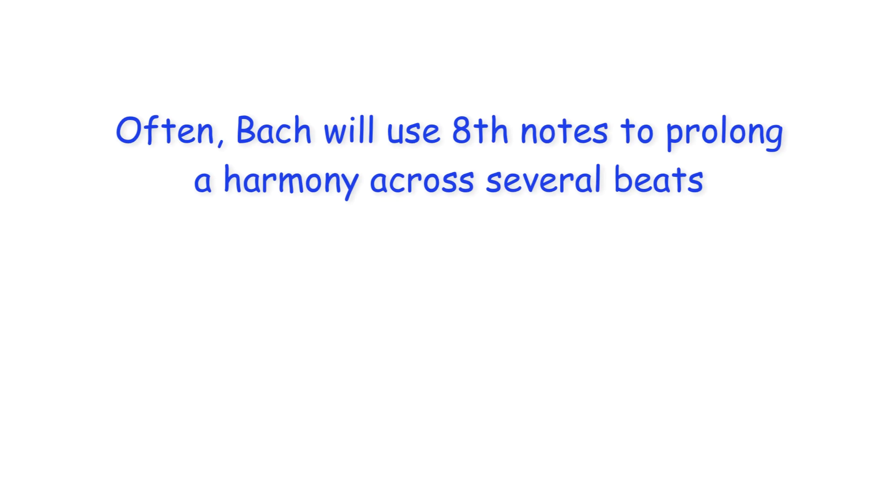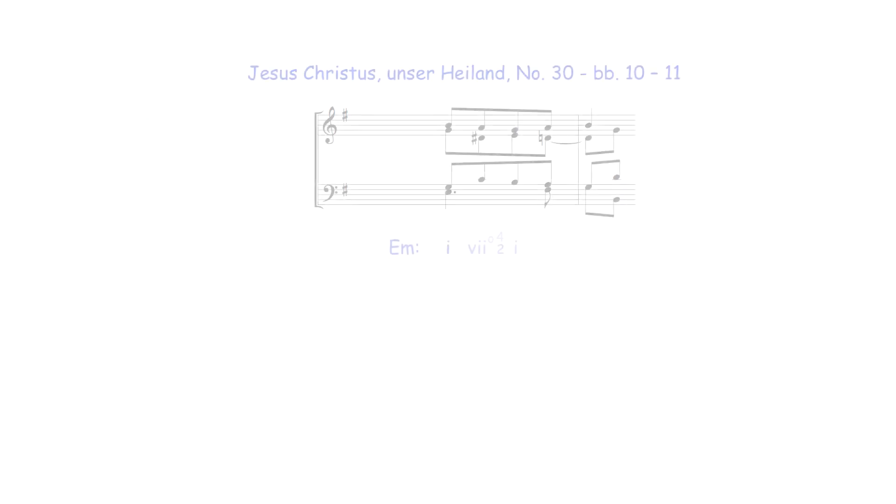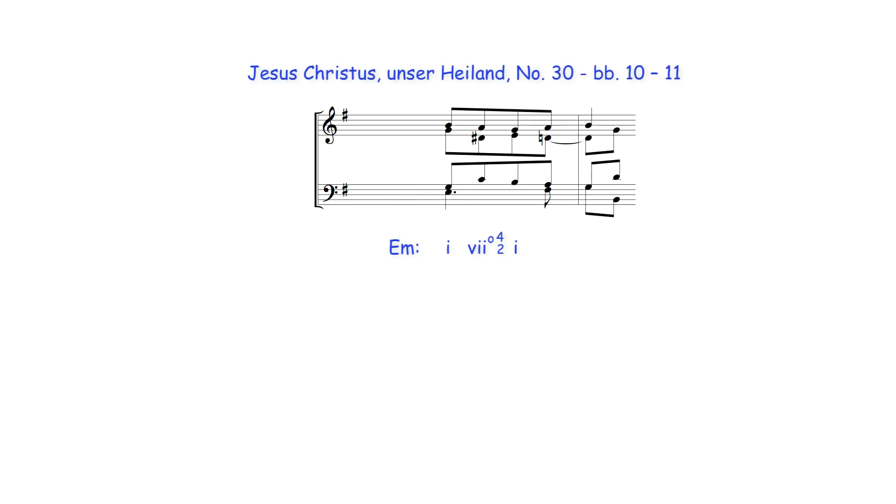Often Bach will use eighth notes to prolong a harmony across several beats. Here for example, the tonic in E minor, which initially sounds on the third quarter note beat of the bar, is prolonged by its leading note diminished seventh chord, which here lacks its third.